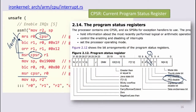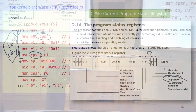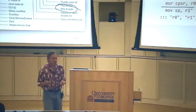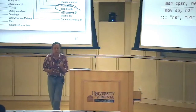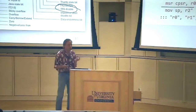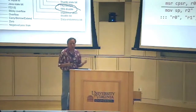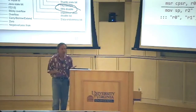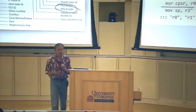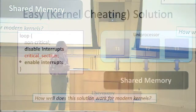So that's the easy solution that traditionally a lot of kernels take: before doing any tricky things in the kernel, disable interrupts and know that this code is going to run single-threaded.